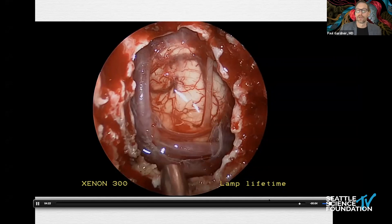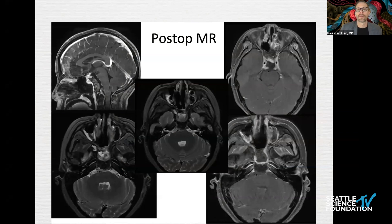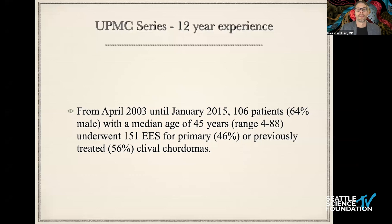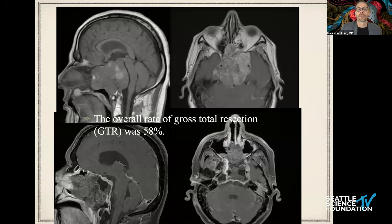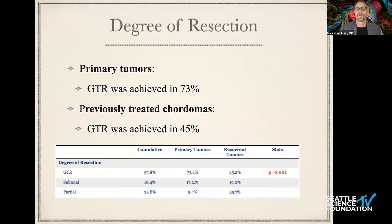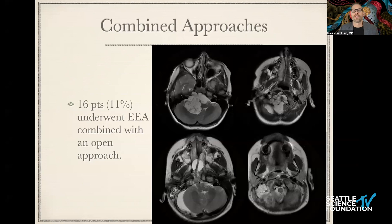The post-op shows a complete resection. Up to 2015, we had operated on about 150 chordomas, achieving gross total resection about 60% of the time, and we improved over time with the learning curve. The gross total resection rate in primary tumors is significantly higher than in recurrent tumors. The goal of surgery should always be the most radical resection possible, and in many cases you still need to use an open approach — most commonly some sort of extreme or far lateral to access portions lateral to lower cranial nerves.